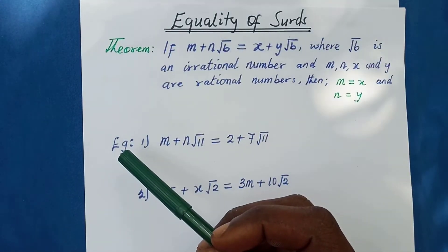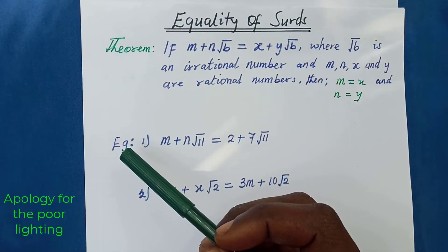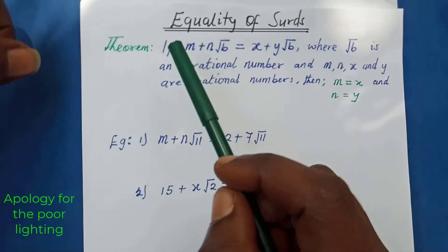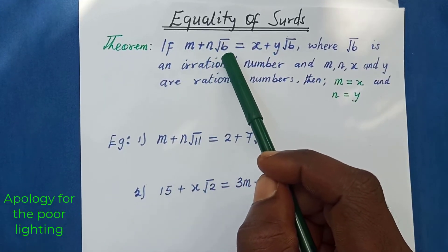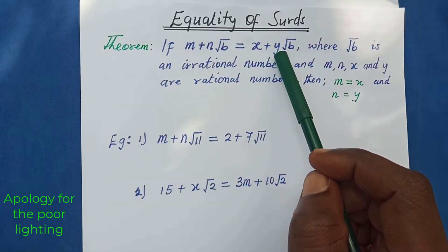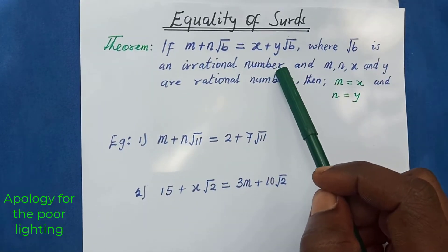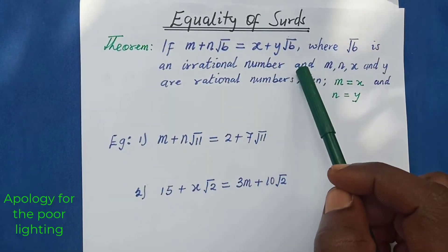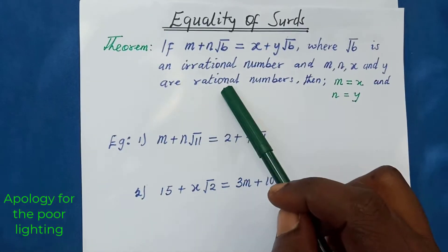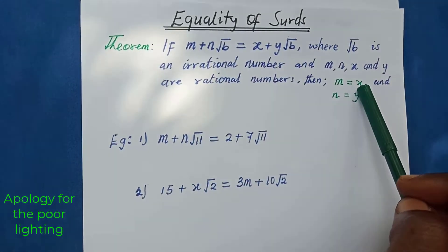Today we are going to talk about equality of sets. Let's look at a very useful theorem. If m plus n root b is equal to x plus y root b, where root b is an irrational number, and m, n, x, and y are rational numbers, then m is equal to x and n is equal to y.